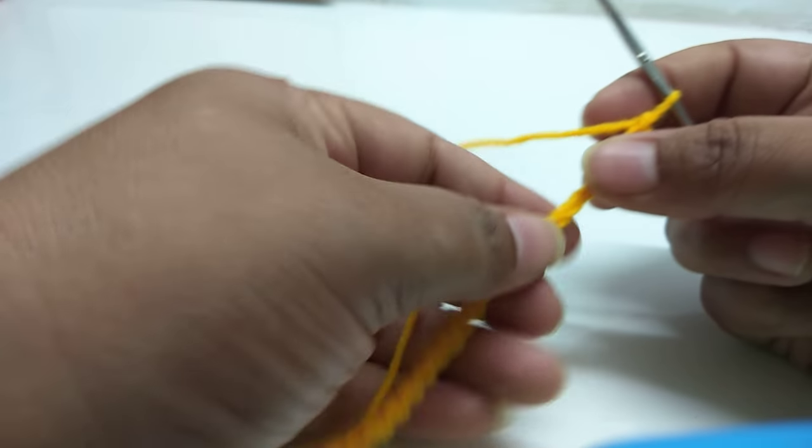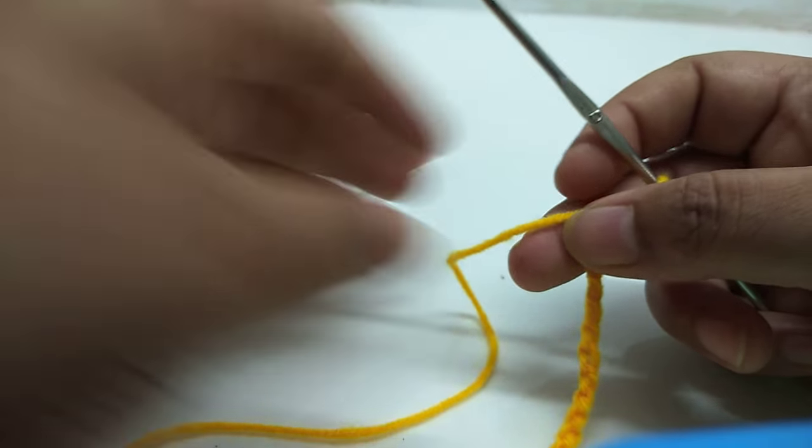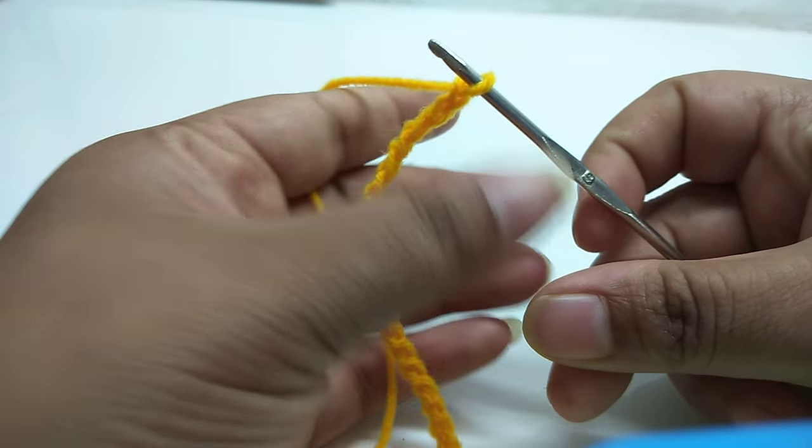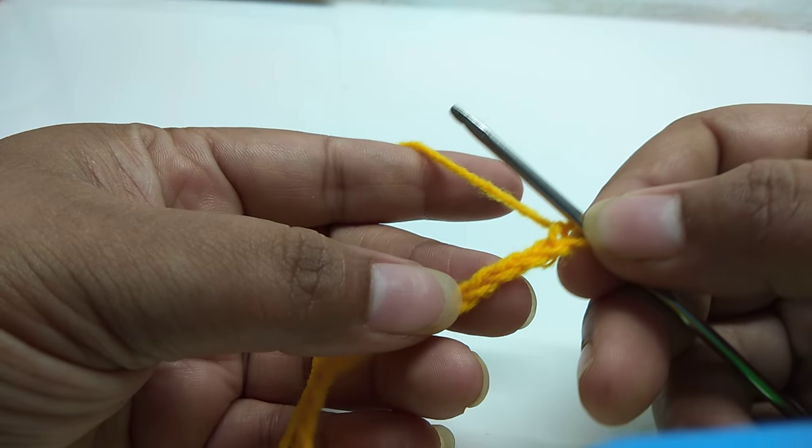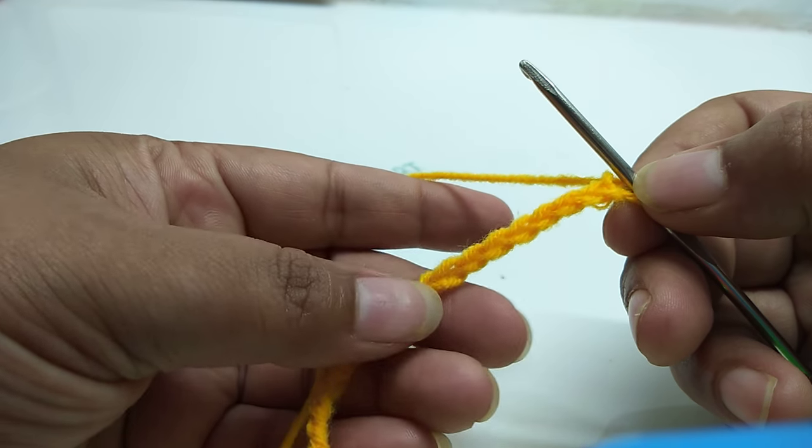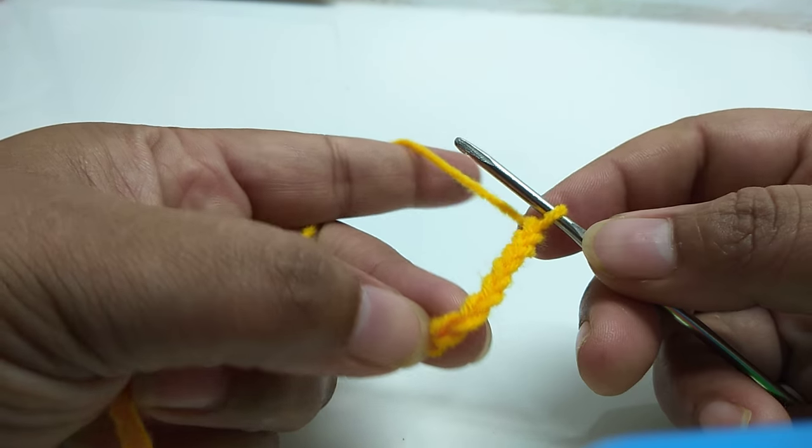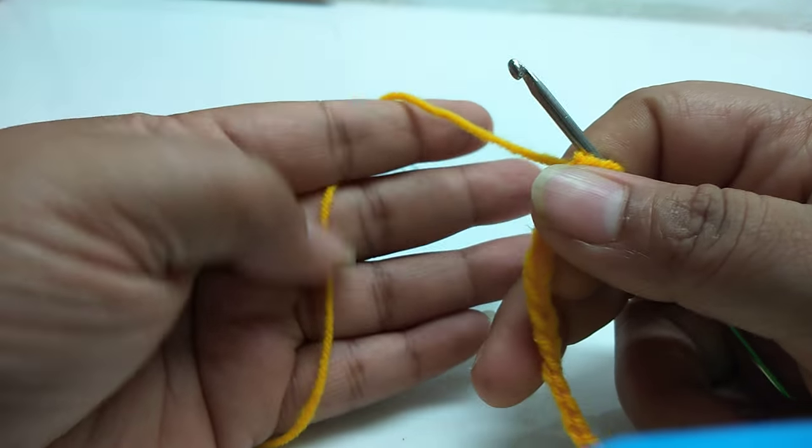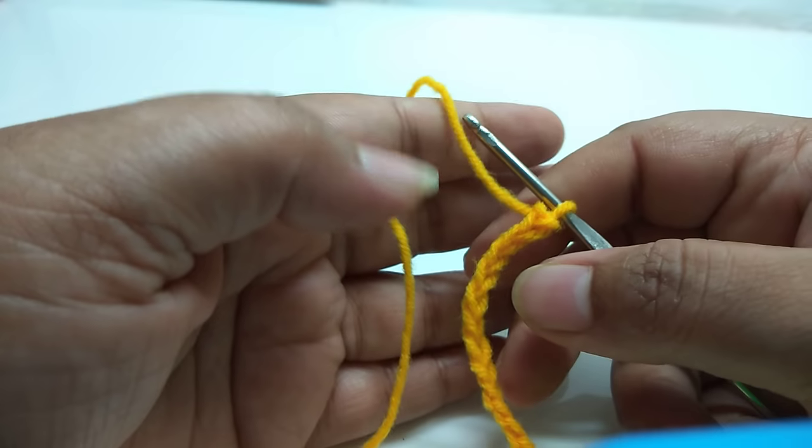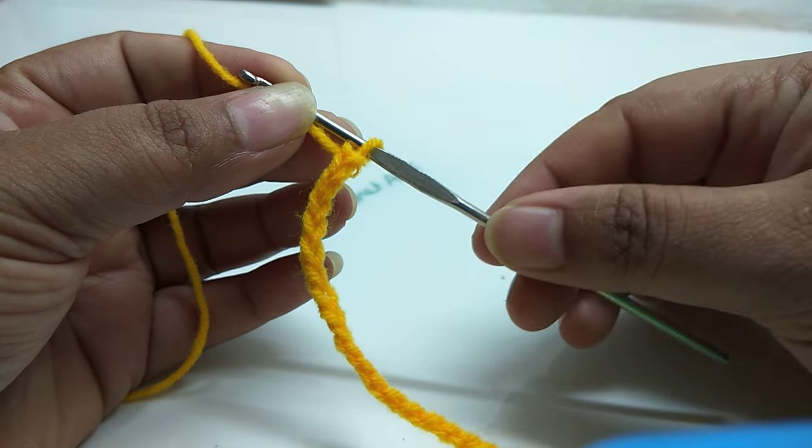In class 1 we have worked this much. In class 2 we will work slip stitch work. For slip stitch work, I have made basic chains, which you will probably have made if you see class 1. So for class 2, this holding technique is this. For stitch work that I have made, I am holding this extra, and I am holding this much.